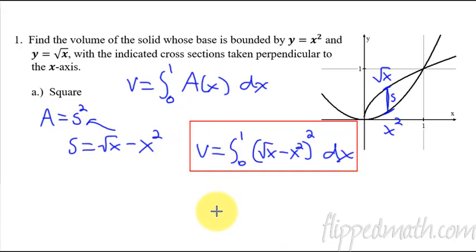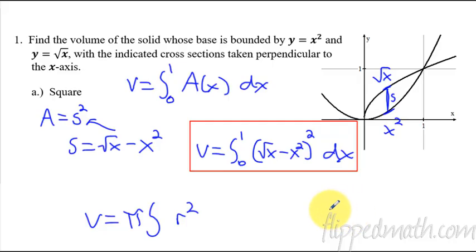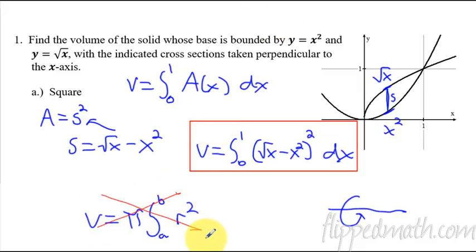Notice this volume is different from the ones we've done in the last two lessons. Remember how our last two lessons always had volume equals pi, and then a radius squared? That's because we were revolving it around a line and creating a circle — pi r squared from A to B. That is not what we're doing today. We are just taking an integral of the area of a cross-section, not revolving anything. Don't get those confused.